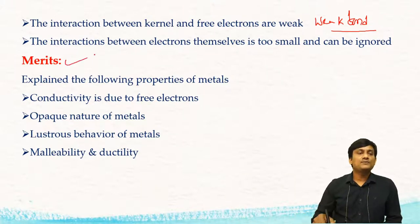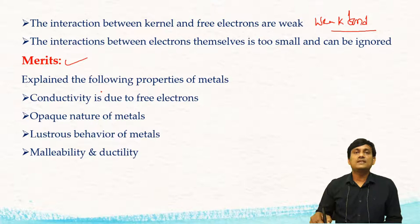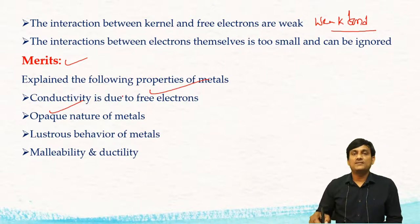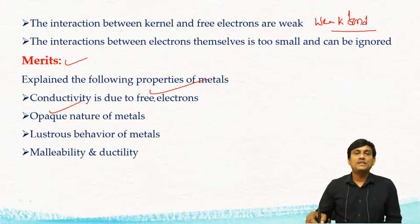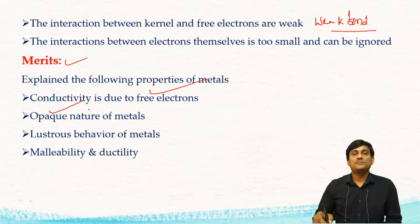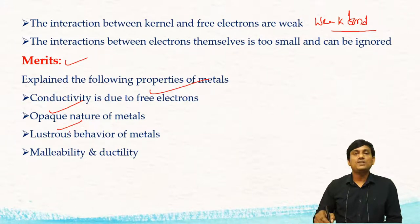What are the merits of free electron theory? It can explain the conductivity of metals. The conductivity of metals is due to free electrons or mobile electrons. And also it can explain the opaque nature of metals — light is absorbed by the metal due to having free electrons. That's why metals are opaque in nature. And also metals are lustrous; they are shiny due to having free electrons.